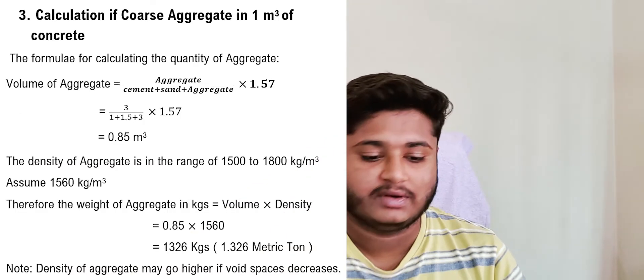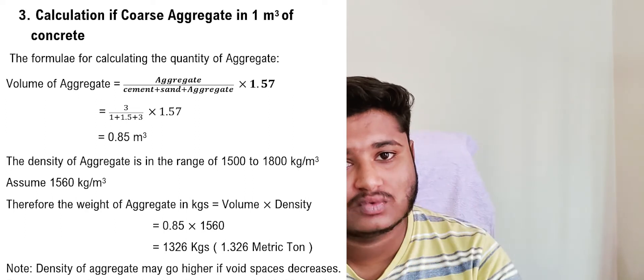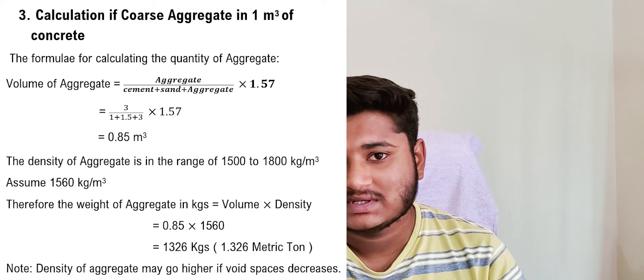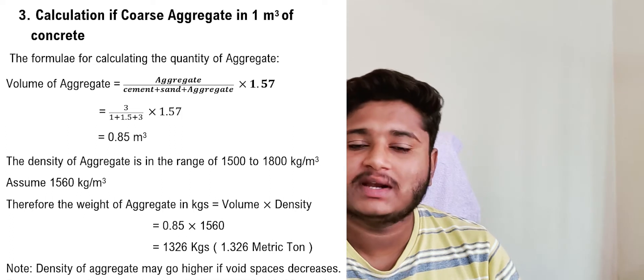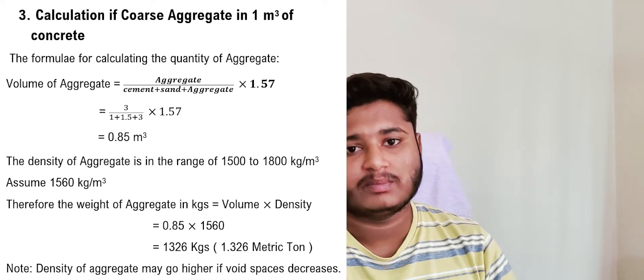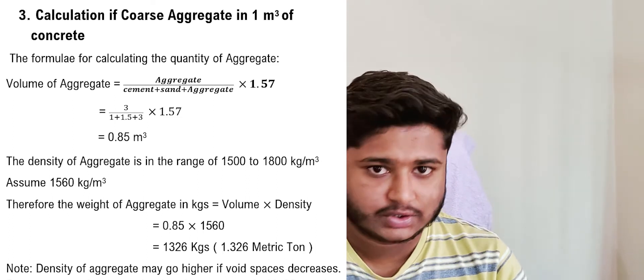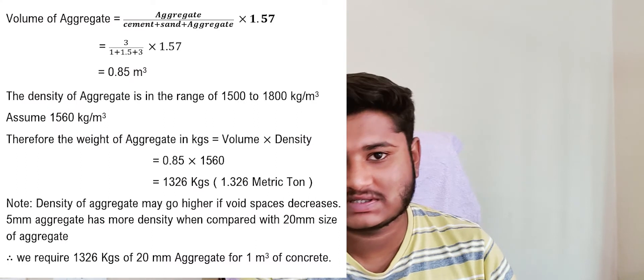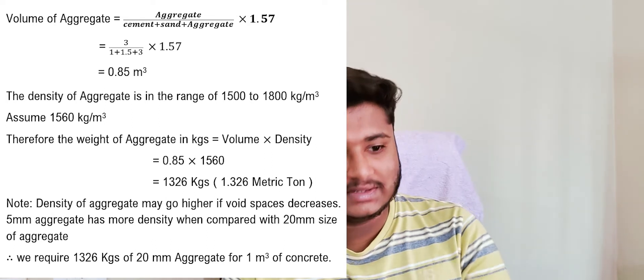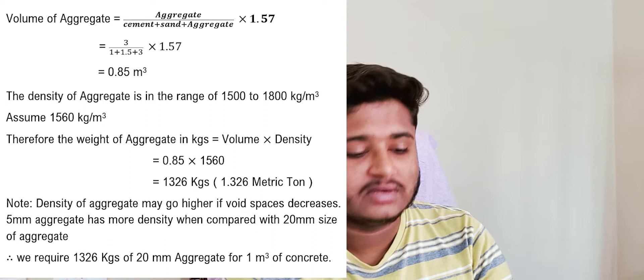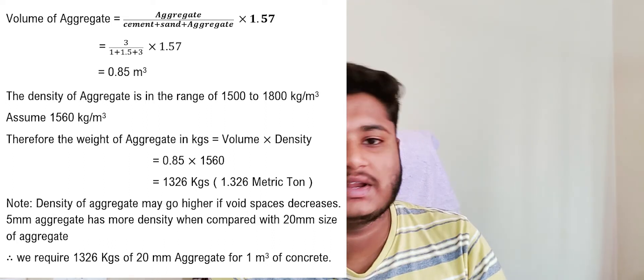For coarse aggregate in 1 cubic meter of concrete, the formula is: aggregate ÷ (cement + sand + aggregate) × 1.57 = 3 ÷ (1 + 1.5 + 3) × 1.57 = 0.85 cubic meters. The density of coarse aggregate varies from 1500 to 1800 kg/m³; we assume 1560 kg/m³. So, 0.85 × 1560 = 1326 kg of coarse aggregate is required.